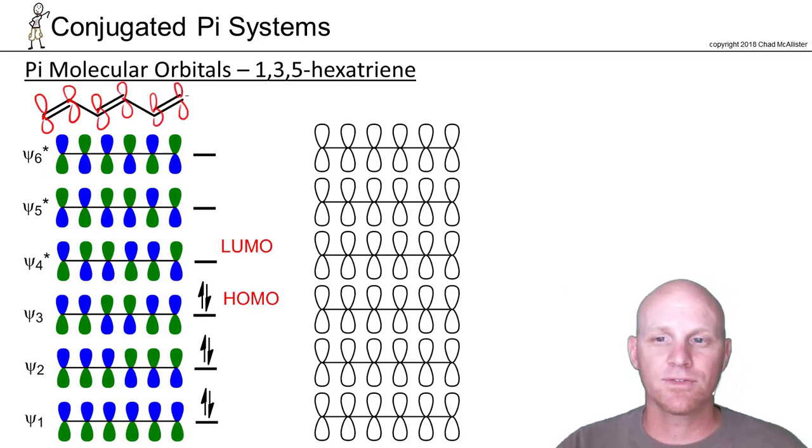So with six p orbitals involved, you're going to make six molecular orbitals, psi 1, 2, 3, 4, 5, and 6.